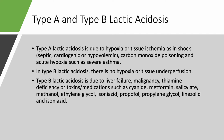In type B, there's no tissue hypoperfusion or hypoxia. You can see it in malignancy, liver failure, and thiamine deficiency. It can also occur with toxins and medications like cyanide, metformin, salicylate toxicity, methanol, and ethylene glycol. Isoniazid, propofol, propylene glycol — though you need a large amount of propylene glycol to cause type B lactic acidosis — and linezolid, which is a known antibiotic.